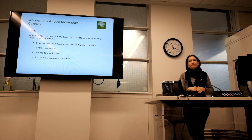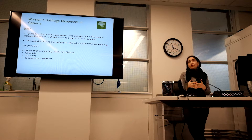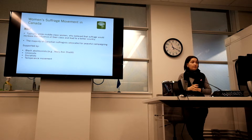Those who struggled for the right to vote were typically white middle-class women. They believed that suffrage would increase the influence of their class and that this right would lead to a better country. The majority of Canadian suffragists were advocating for peaceful campaigning. They were supported by different social groups, including black abolitionists such as Mary Ann Shadd, who was an American anti-slavery activist, a publisher, a lawyer, and a teacher.